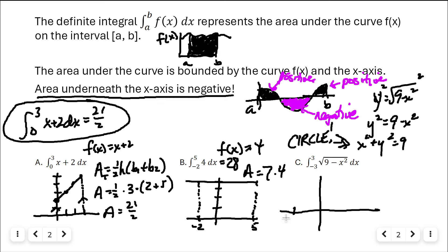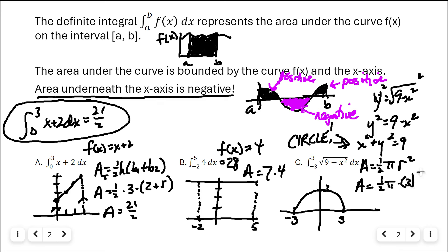So it's a semicircle from negative three to three with radius three. The area of a semicircle is one half pi r squared. That's one half times pi times three squared, giving nine over two pi. That is what this integral evaluates to. We're taking shapes we know how to find the area of, matching them to given functions, and computing the area.